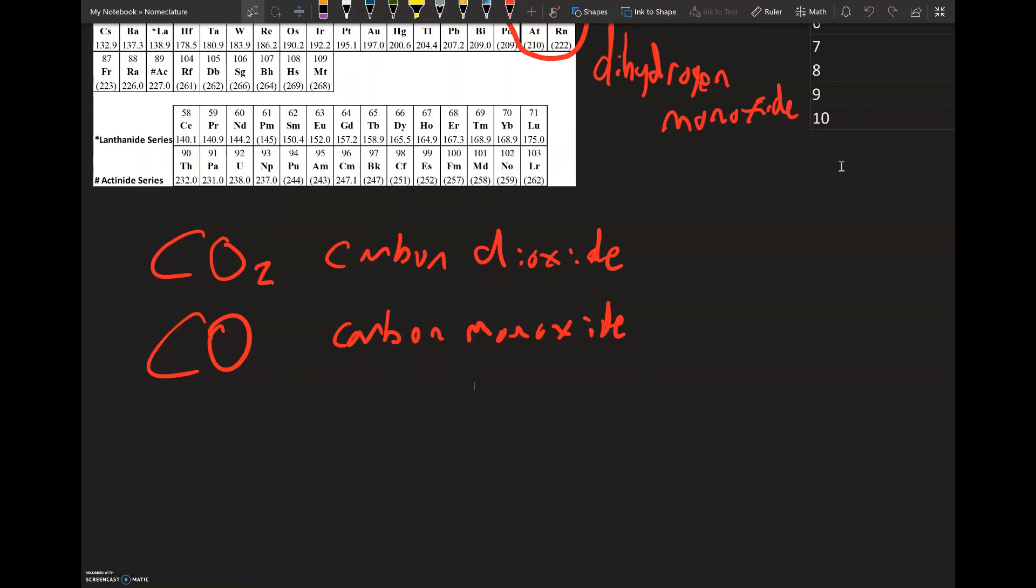Let's say we have tetracarbon octahydride. Now this is not a real compound, it's just a made-up compound, but it's an example.